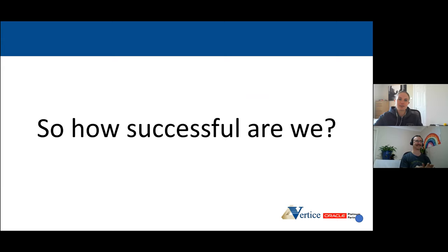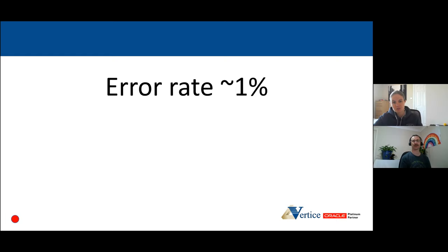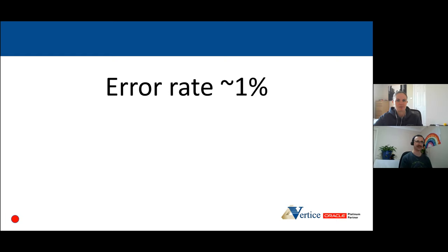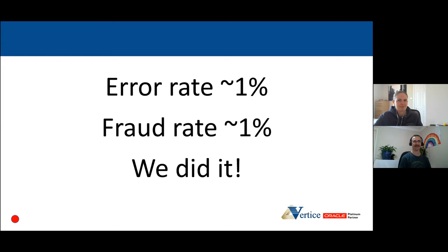So let's put the rules into production. The SQL rules seem pretty powerful. Now, the all-important question: how well did we do? Looking back over historical transactions and previously identified fraud, our error rate is about 1% — we correctly tagged 99% of transactions — and the fraud rate within those transactions was also about 1%. These numbers look pretty good on the surface. So let's see the transactions we've pulled out. We'll look at the sender and receiver house — and at the top, we've got Wildlings and the Night's Watch doing something suspicious.